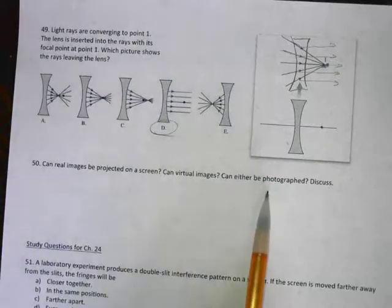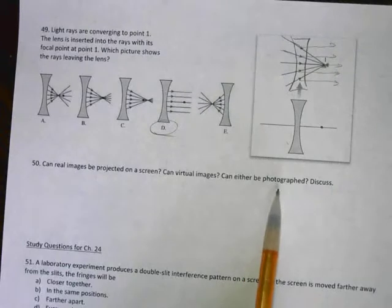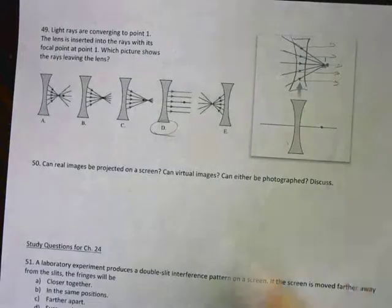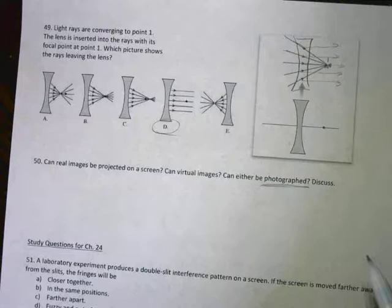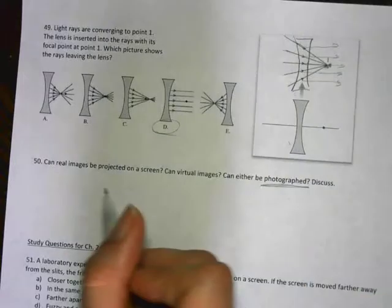Both can be photographed. Yes. And this was fine. Yes, both can be photographed. But the reason that they can be photographed is because that photograph, that camera, has a converging lens inside of it.